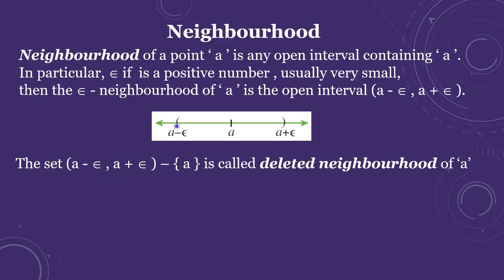If we do not include the point a itself, it is represented as the open interval (a - ε, a + ε) minus the set {a}. That is, all points in the neighborhood except a itself. This is called the deleted neighborhood of a. In the diagram, the deleted point a is represented as an empty circle.